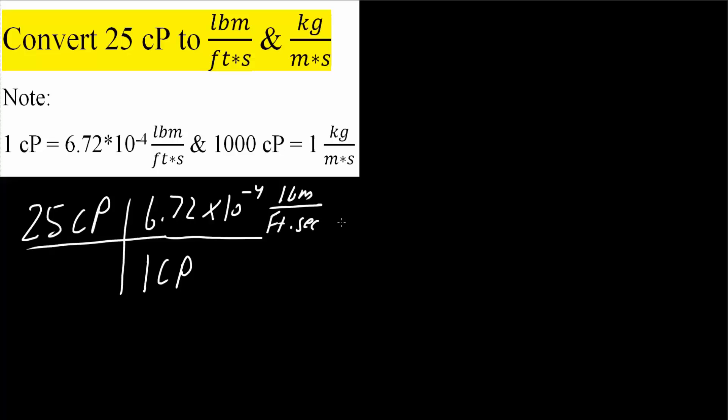And if we were to use a calculator, we would get 0.0168 pound mass divided by feet times seconds. And this would be our final answer.